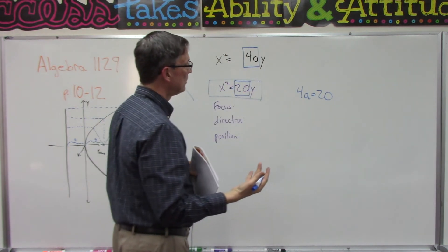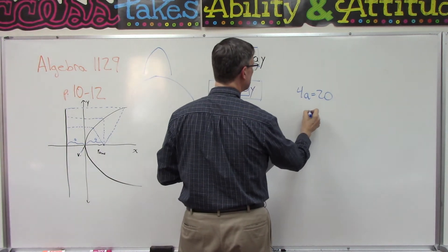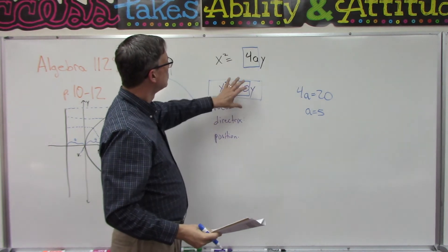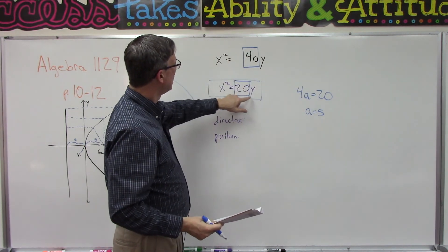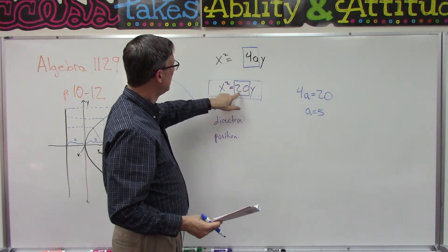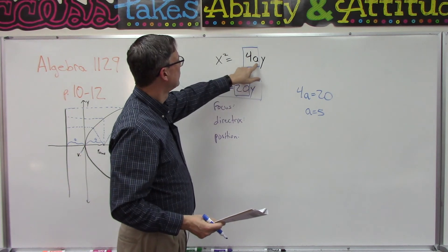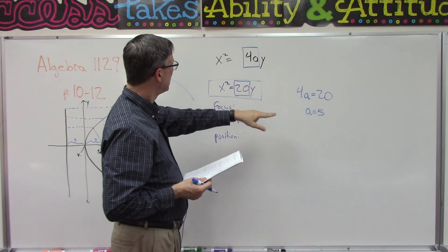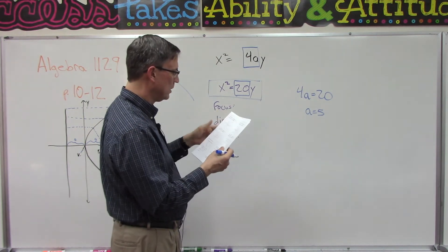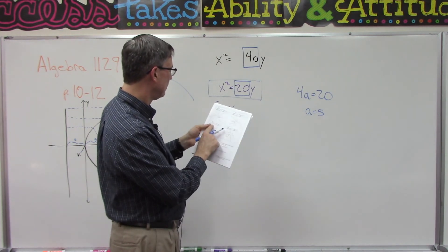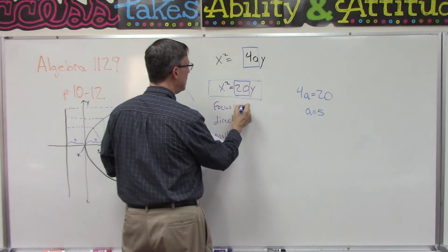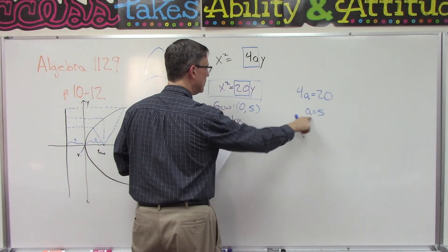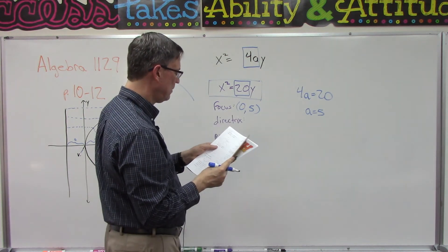Now I can divide both sides by 4 to figure out that a is 5. So whenever you see these, whatever comes in front of the y, you have to set that equal to the 4a. And now we can figure out the focus. So let's see, I'm looking at this one over here now.